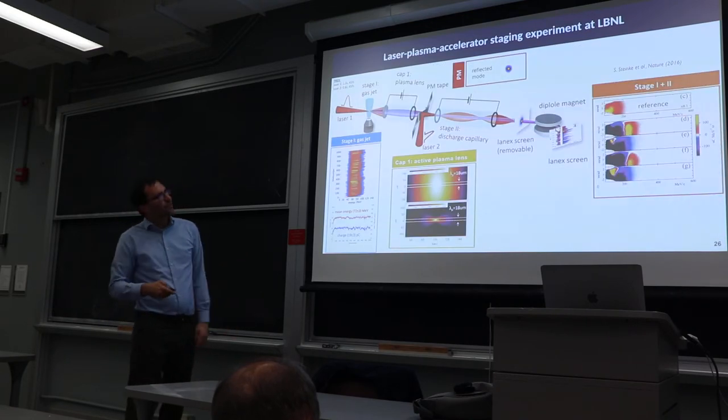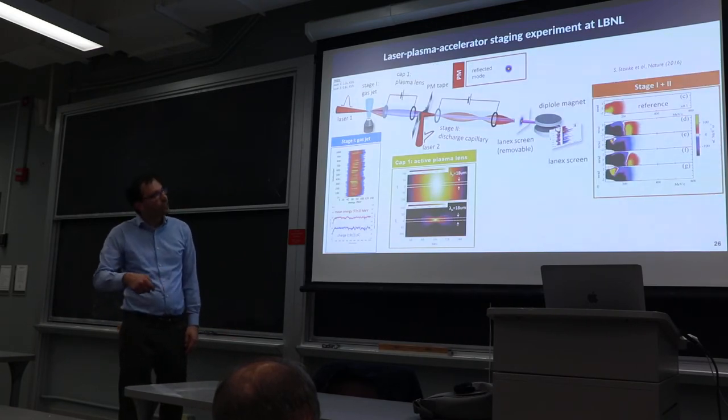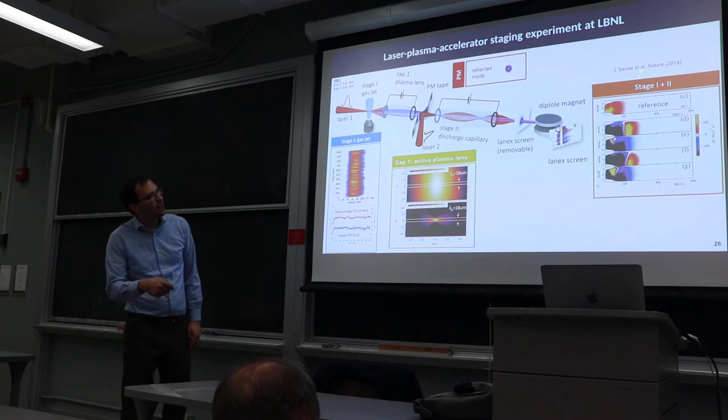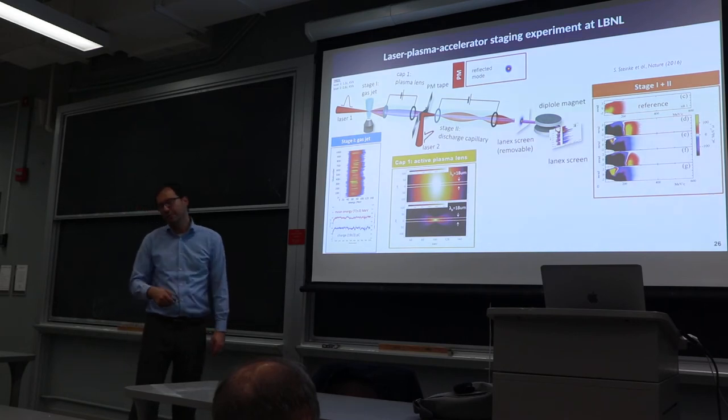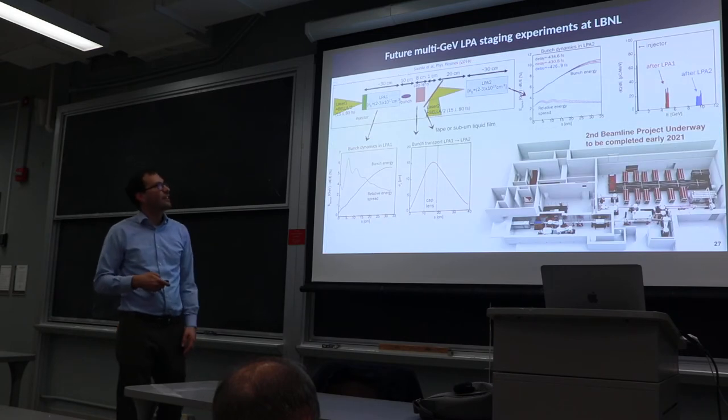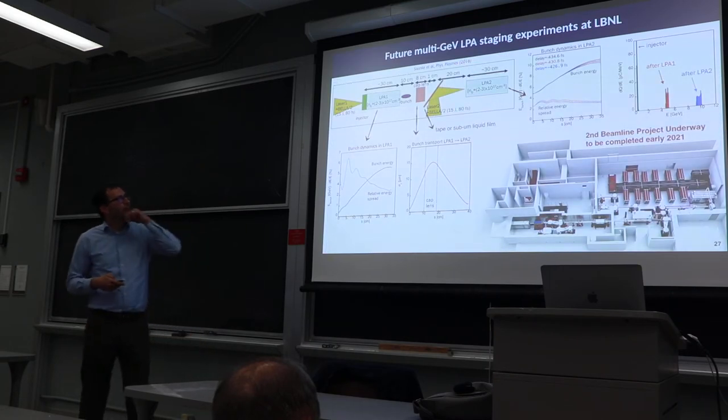That was our first proof of principle staging experiment, but this is really done at the 100 MeV level—we're going from about 75 MeV up to maybe 200 MeV. We'd like to repeat this at the GeV level, and right now we have plans to do that.